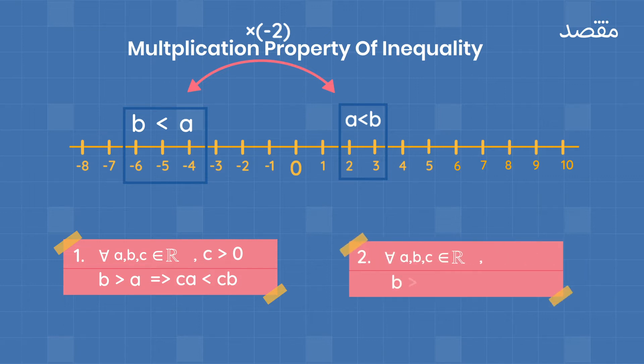Next, we say that if b is greater than a and we multiply it by a negative number, basically if c is less than zero, then the inequality gets flipped. Basically, now ca will be greater than cb, and this also holds true for all real values.